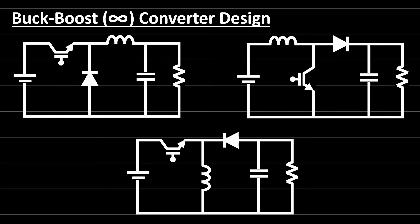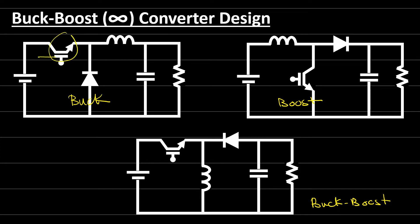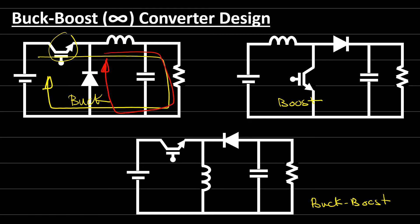Let's recall first the buck converter and the boost converter and see what the differences are when we compare these two converters with the buck-boost converter. For the buck converter, when the switch is conducting the current flows in one direction, and when the switch is off the current flows in the other direction. Because we have two currents at the output and one current at the input, the output voltage is less than the input voltage — that's why we call it a buck converter or step-down converter.